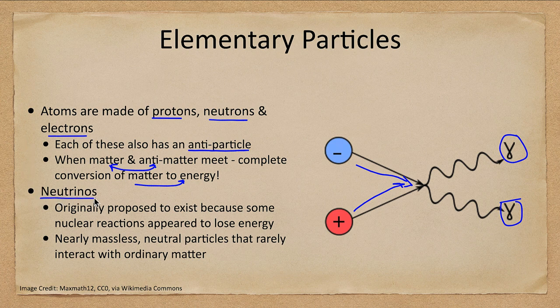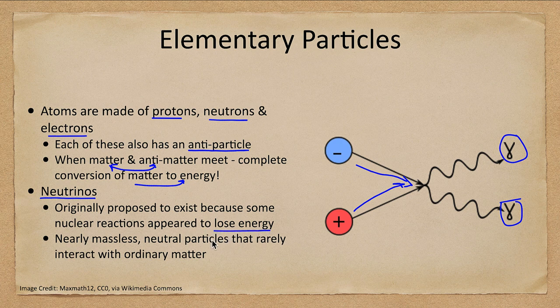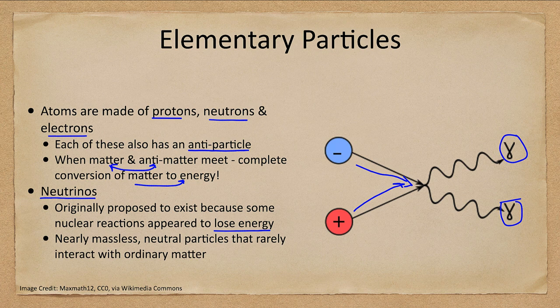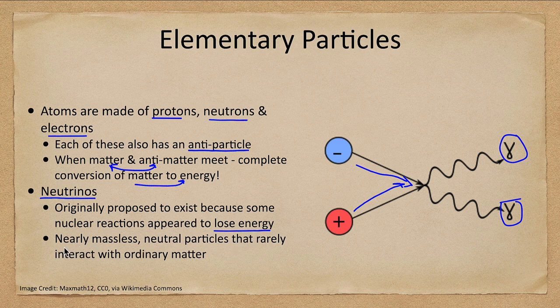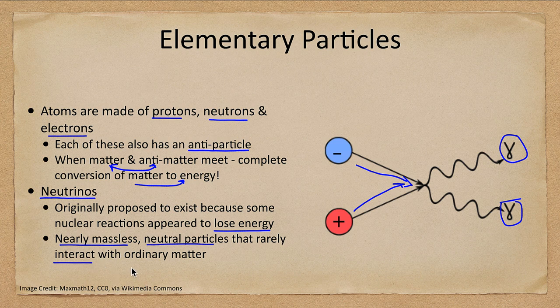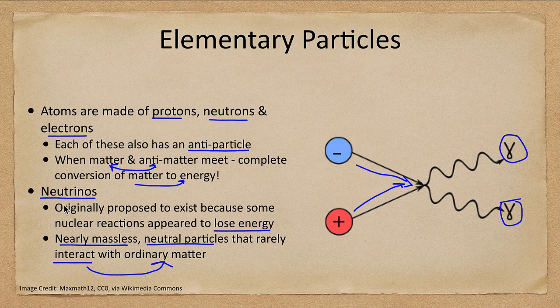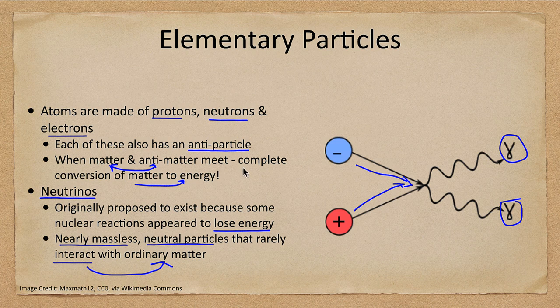Another elementary particle is the neutrino. The neutrino was proposed first because there were some nuclear reactions that looked like they lost energy. Believing in the conservation of energy, it was proposed that another particle was present that was not detected. These are very nearly massless particles. They are neutral, so they do not have any electrical charge. And they are weakly interacting. They do not interact with ordinary matter, so they travel right through everything. They are one way that we can get a look into the interior of our sun.